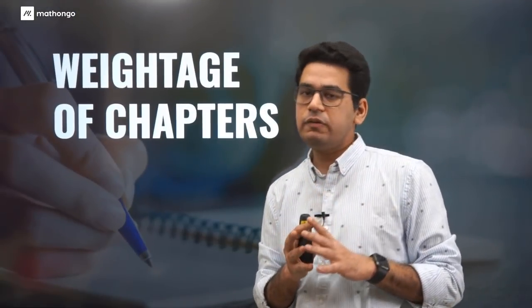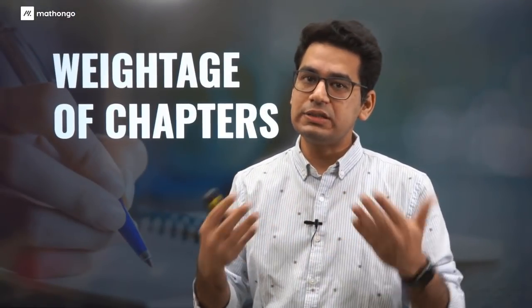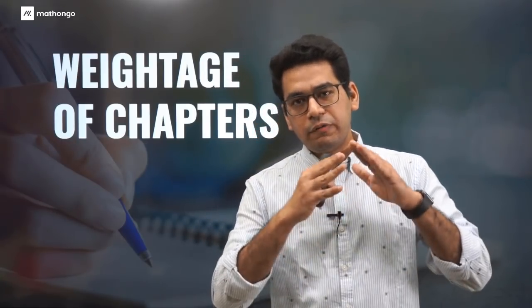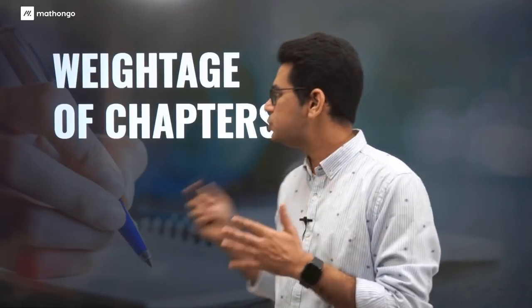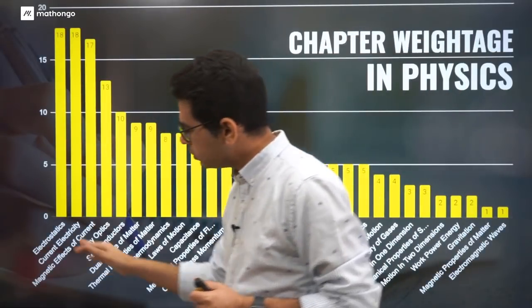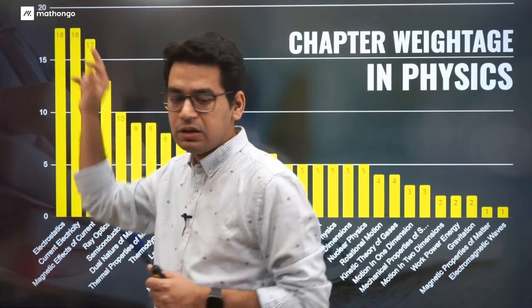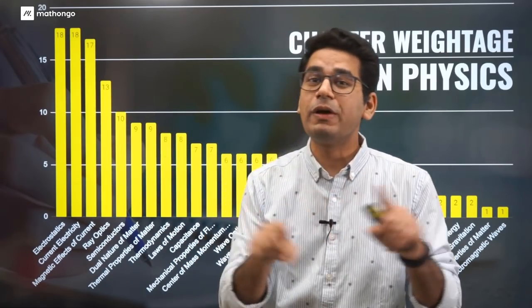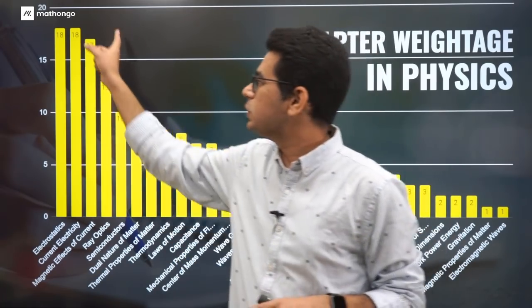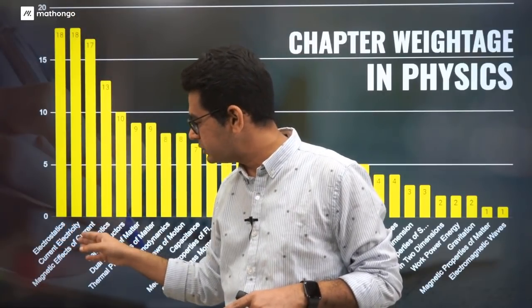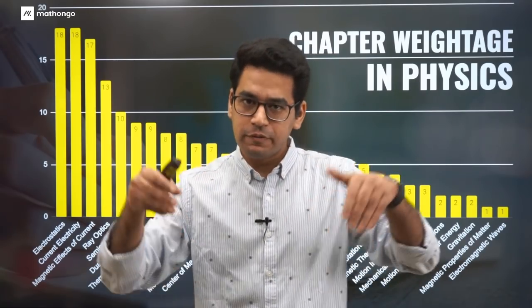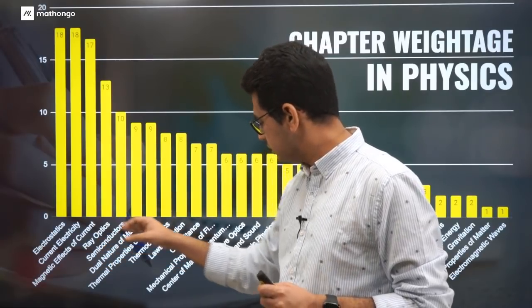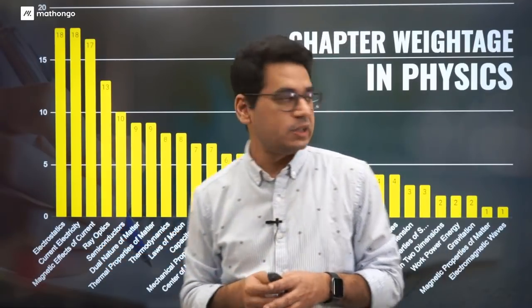Let's discuss weightage of chapters, very important. We will talk about what weightage each chapter has in the exam. What we did was calculate for the last five years how many questions came from which chapters, and this is what we landed up with. Chapter-wise weightage in physics: the most important chapter is electrostatics with 18 questions. Current electricity, 18. Magnetic effects of current, 17. That is why electromagnetism was important in physics, because the top three chapters are electrostatics, current electricity, and magnetic effects of current.